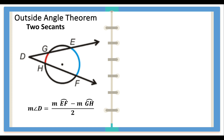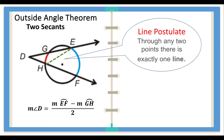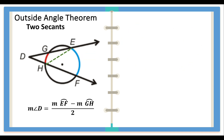Let us start by joining point E and point H. Why are we allowed to do that? Due to the line postulate, which states that through any two points there is exactly one line — and that is the segment we have drawn. Having drawn a segment from point E to point H, there is now a triangle formed: triangle DEH.